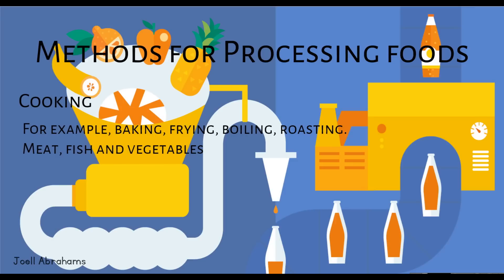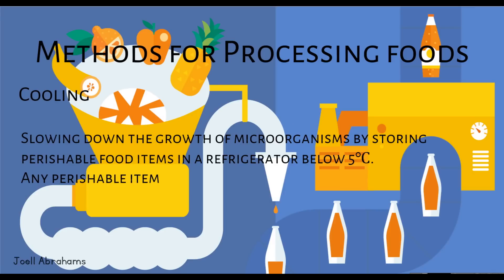Cooking — for example, baking, frying, boiling and roasting meat, fish and vegetables. Cooling — slowing down the growth of microorganisms by storing perishable food items in the refrigerator below 5 degrees, for any perishable vegetable item.